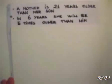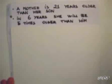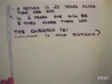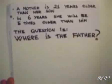Here is a not-so-easy trick for you. A mother is 21 years older than her son. In six years, she will be five times older than him. The question is: where is the father?